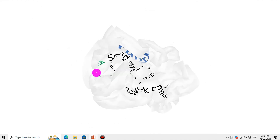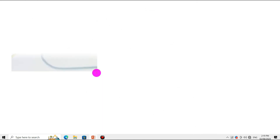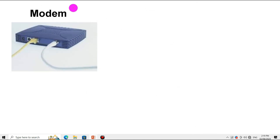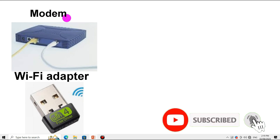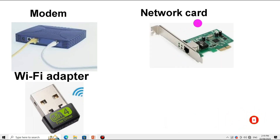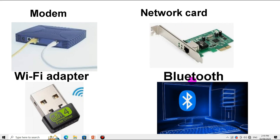These functions are supported by different network applications including Gmail, Telegram, and more. Here is a simple example showing a modem, Wi-Fi adapter, network card, and Bluetooth device. That covers everything about communication devices in computer hardware components. If you have any questions, please write in the comment section. Bye bye.